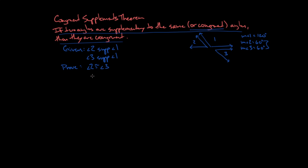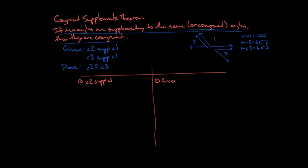Whenever I'm trying to prove a theorem, my given should reflect what's in the hypothesis, and my prove statement should reflect what's in the conclusion. The reason for this is I'm trying to show that no matter what, whenever my hypothesis is true — the givens are true — the conclusion will always follow. And if I prove that here once, I can use that theorem whenever I want down the line.